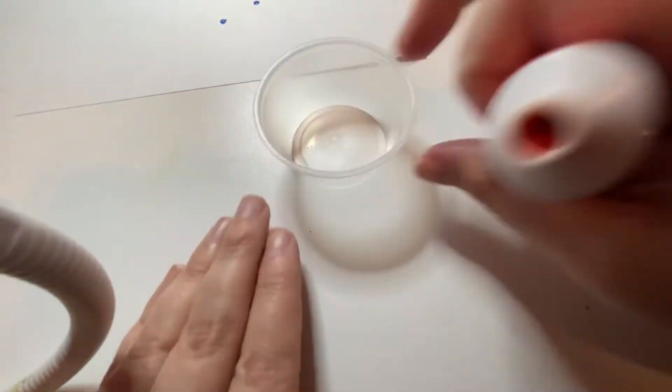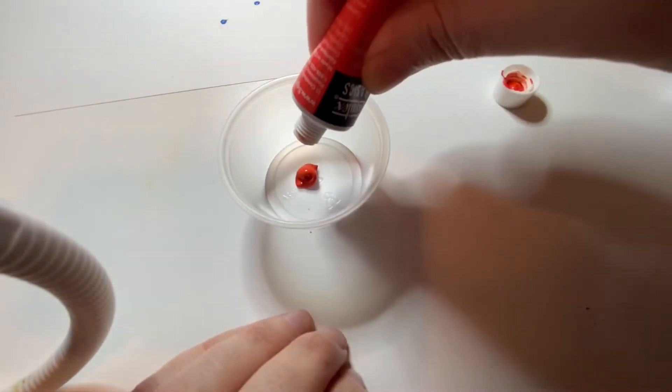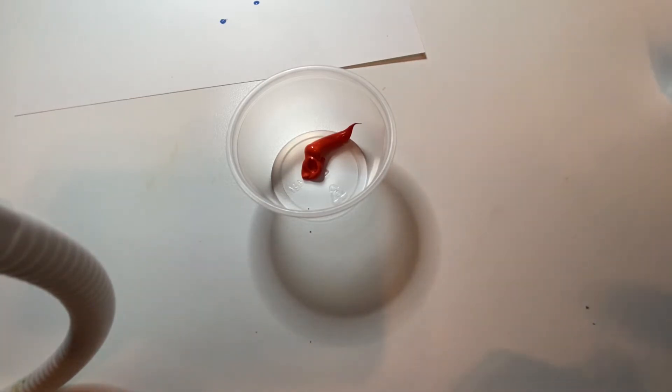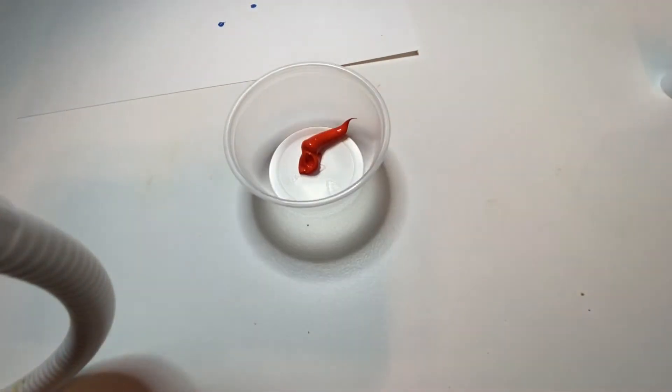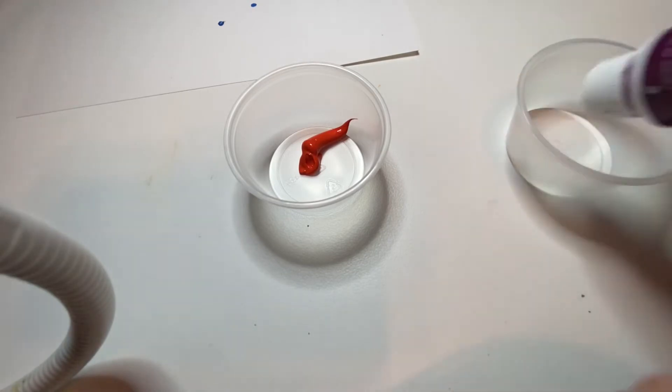If you let it dry on there, you're going to have a Sharpie with some paint on there. So just make sure that you clean it off before putting it back. You should just be able to run it under some water and it'll be fine.